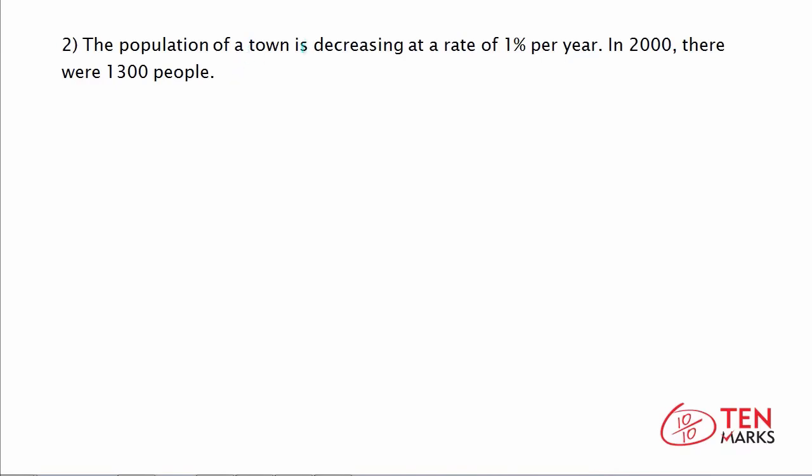We're told that the population is decreasing, and decreasing is associated with decay functions. So we know we're going to be working with exponential decay. We're also told that the rate remains the same — it's 1% per year.